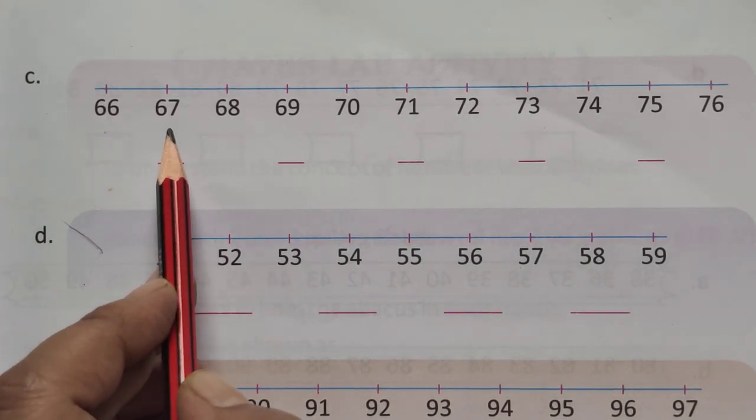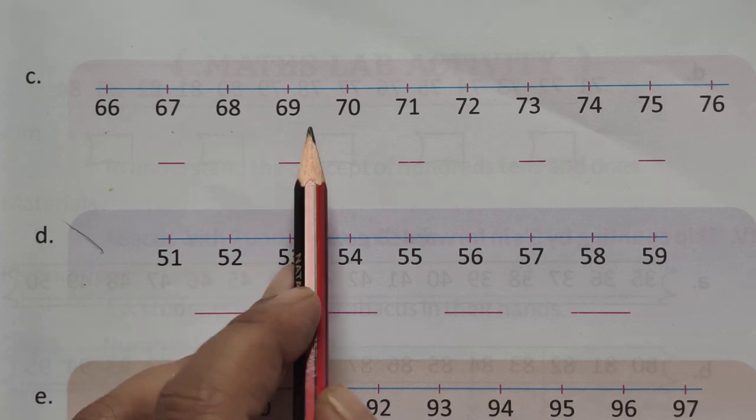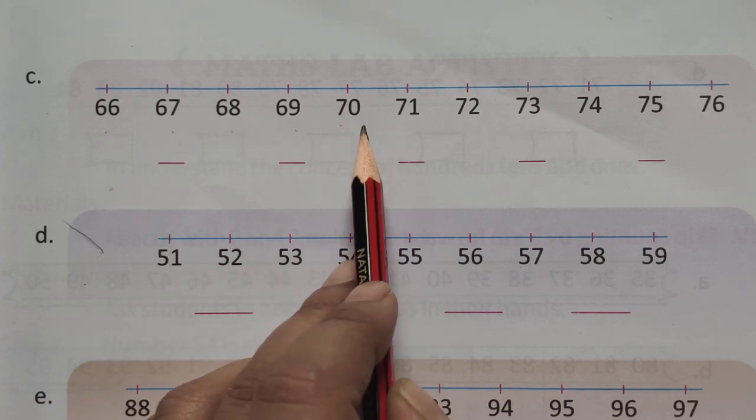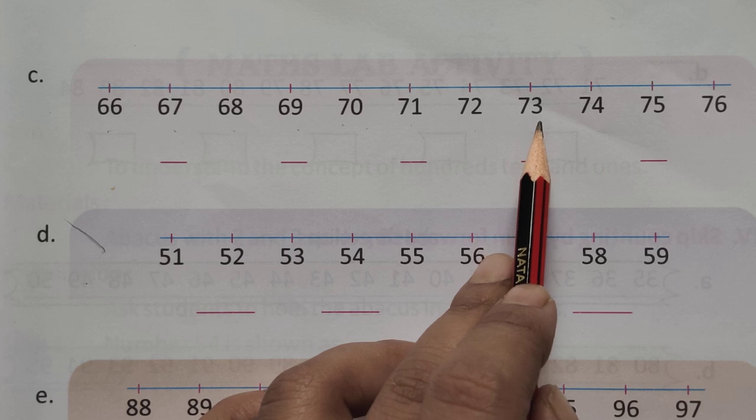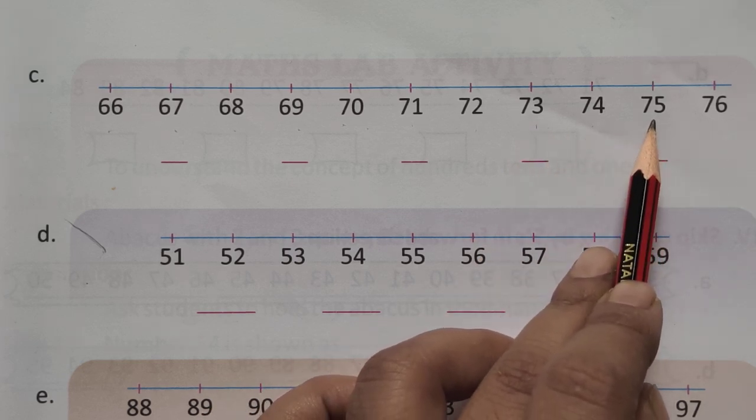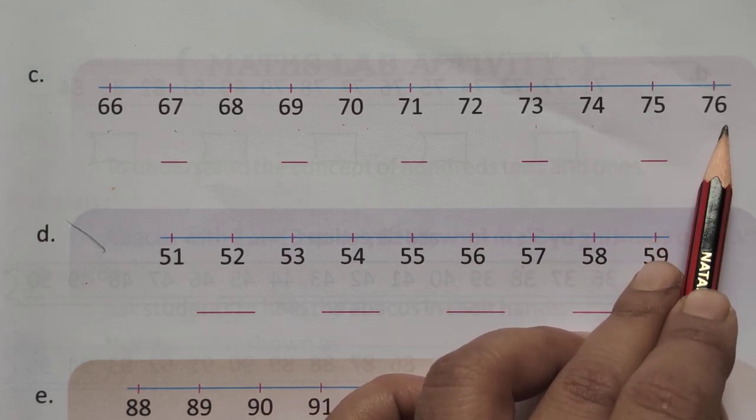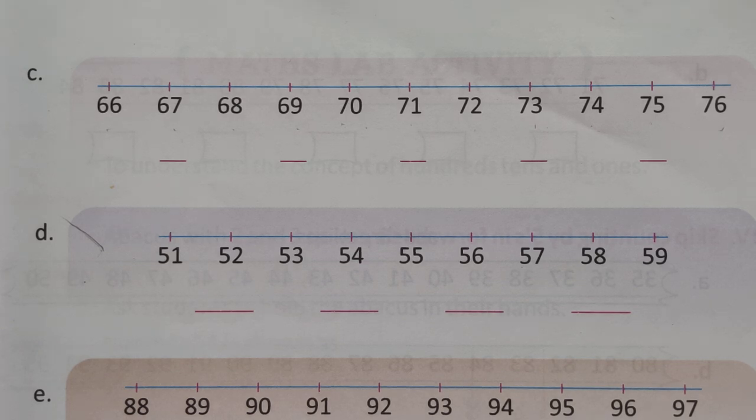C. 66, 68, 69, 70, 71, 72, 73, 74, 75, and 76. Skip by 2.